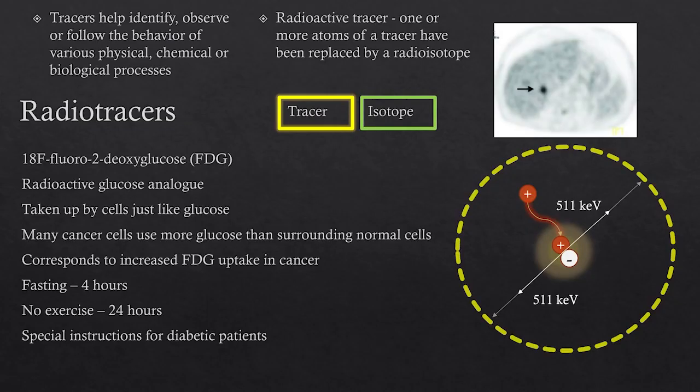To start off with, we'll have an overview of radiotracers. Radiotracers help identify, observe, and follow the behaviour of various physical, chemical, or biological processes. With radiotracers, we basically add a radioactive isotope. When these are injected into the body, depending upon the type of radiotracer we use, we get a different pattern of distribution.